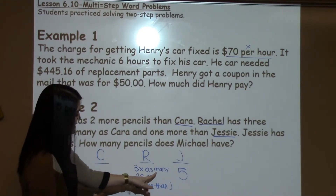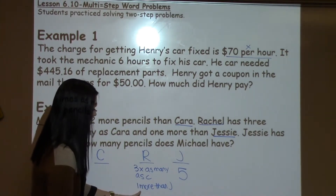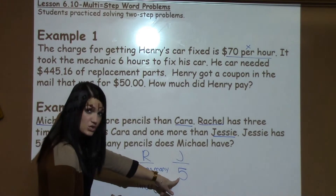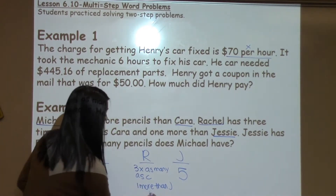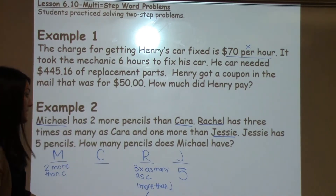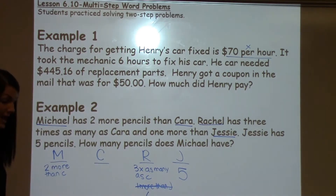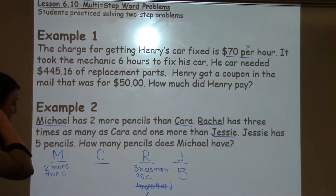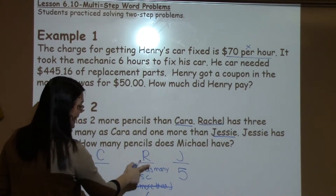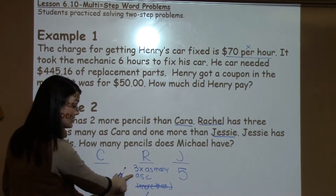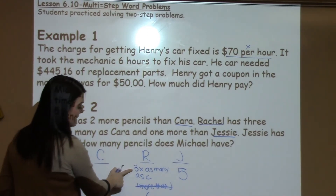The question asks how many pencils Michael has, but I only have information about Michael in reference to Kara, so I also need to figure out how many Kara has. It says Rachel has three times as many as Kara — I don't know Kara's amount yet — but Rachel also has one more than Jesse, and Jesse has five. One more than five is six, so Rachel has six pencils. Now I can use that to find Kara.